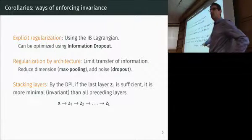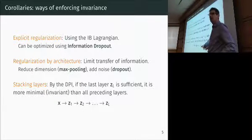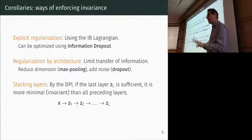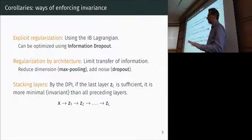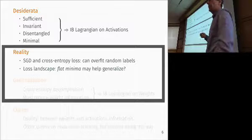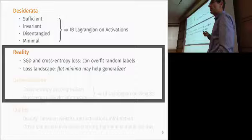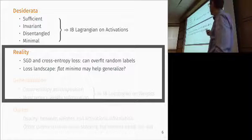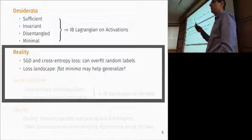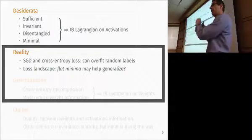Does this mean the more layers the merrier? No — this holds given sufficiency, so as long as you can train your network, which becomes more and more difficult as it grows bigger, you stand to benefit. All I've done is formalize notions I stated in words at the beginning, arriving at a cost functional — an information bottleneck Lagrangian on the activations. Given a test datum, you pass it through the function and get Z with the desirable properties.